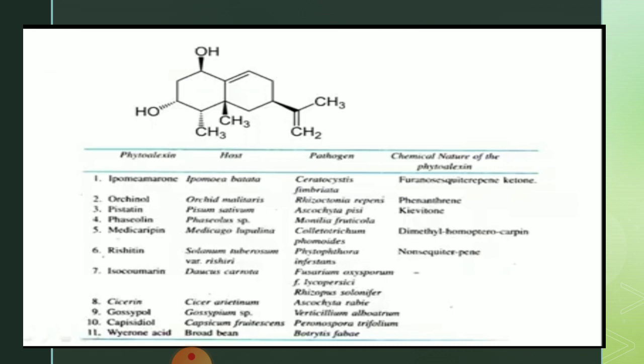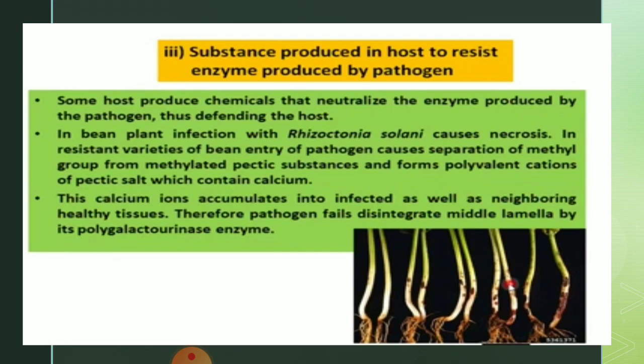For example, isocoumarin is a phytoalexin found in the host Daucus carota (carrot) against the pathogen Fusarium oxysporum. You should learn the phytoalexin name, the host plant, and the corresponding pathogen for at least five examples.